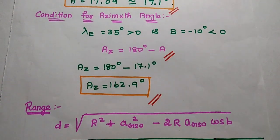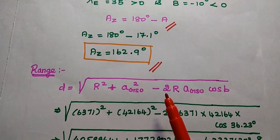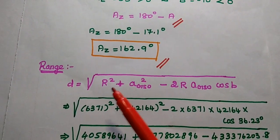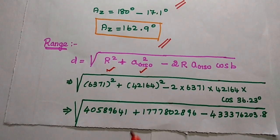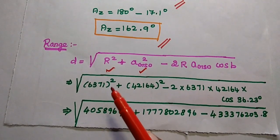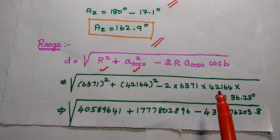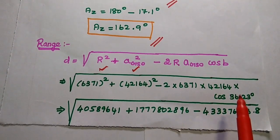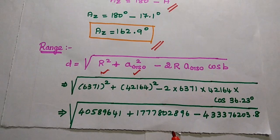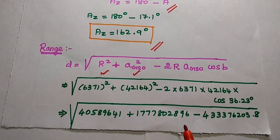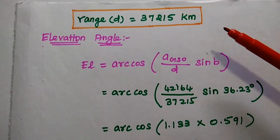Next, we find the range D. Using D equals sqrt(R² + A_GSO² − 2 × R × A_GSO × cos b), substituting R = 6,371 km, A_GSO = 42,164 km, and b = 36.23°, we calculate and get D equals 37,215 km.